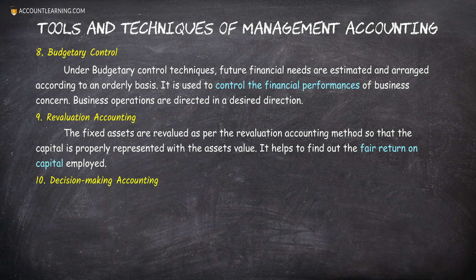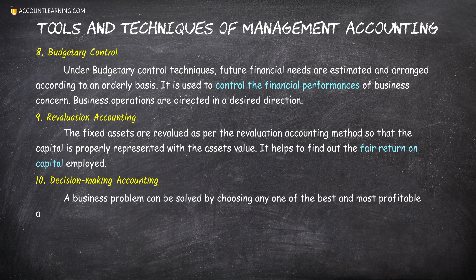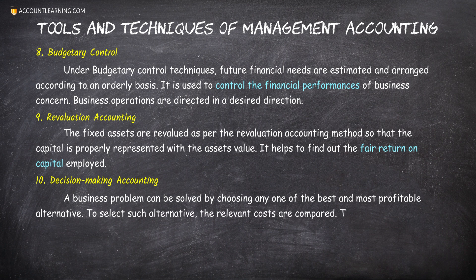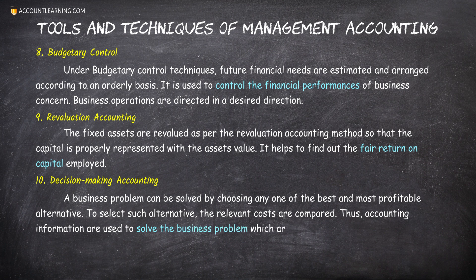10. Decision Making Accounting. A business problem can be solved by choosing any one of the best and most profitable alternatives. To select such an alternative, the relevant costs are compared. Thus, accounting information is used to solve business problems which arise out of the increasing complexity of the nature of business.